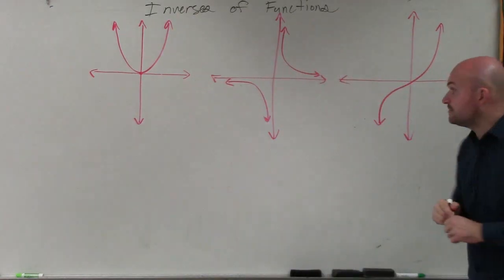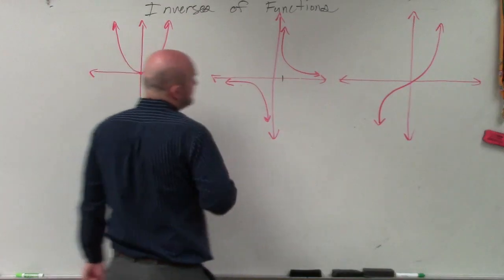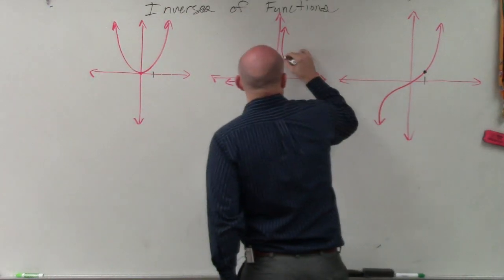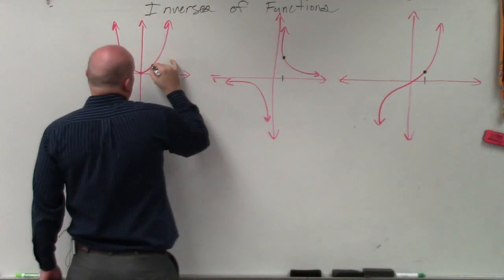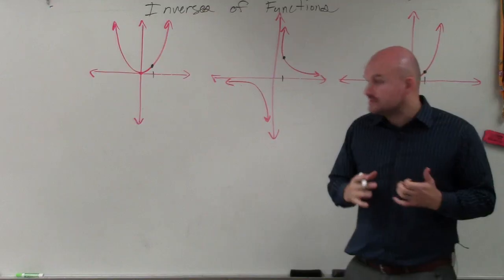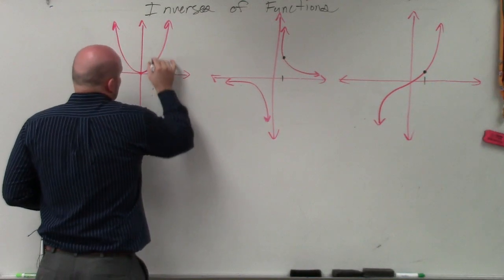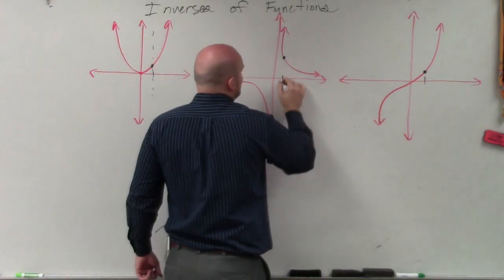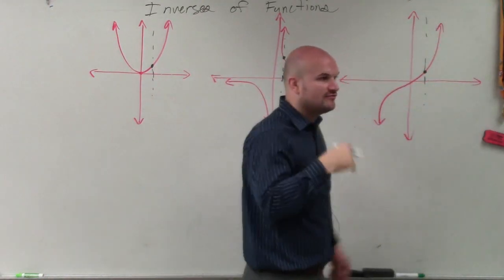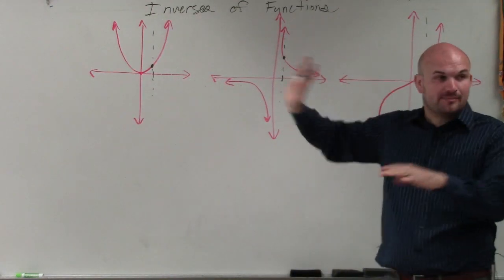And the reason why they're all examples of functions, if you look at any value of your input 1, each of these only have exactly one y-coordinate when x equals 1, right? So that's what a lot of times we call the vertical line test. You guys could see that the graph passed the vertical line test because there's only one output for every input. That's what made these functions.